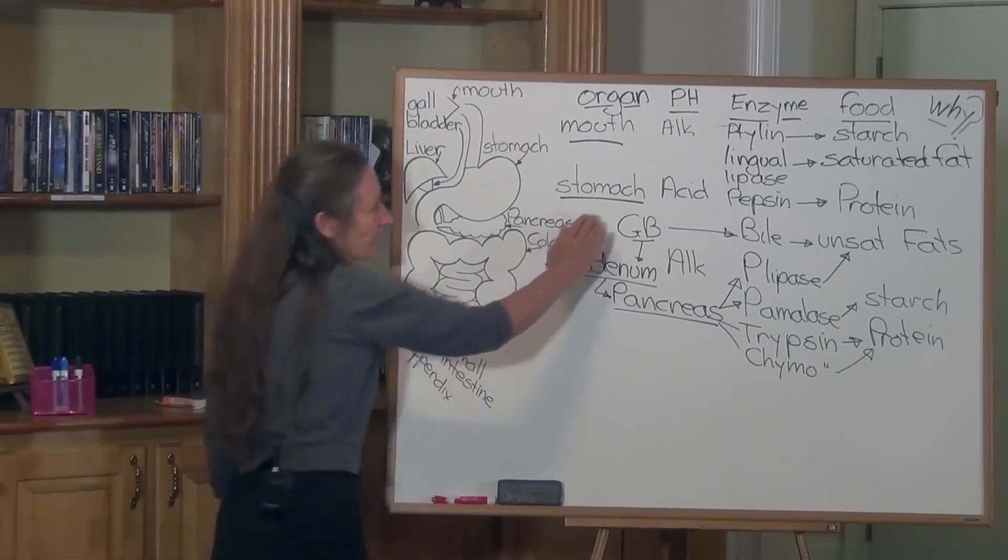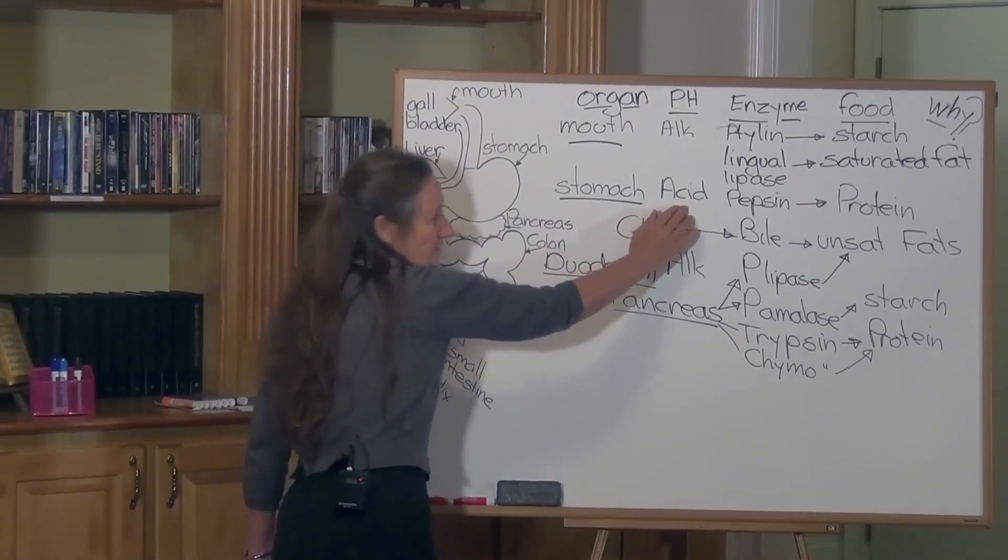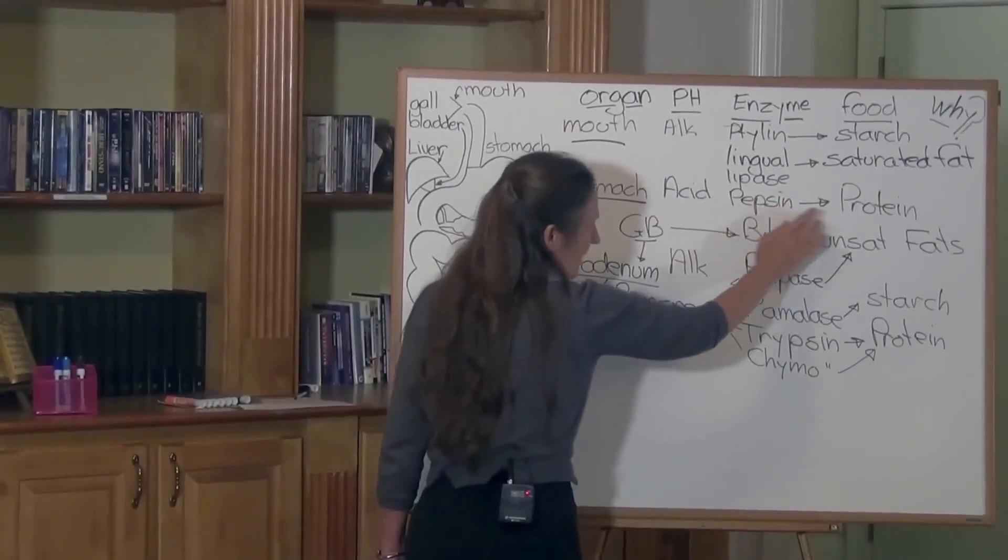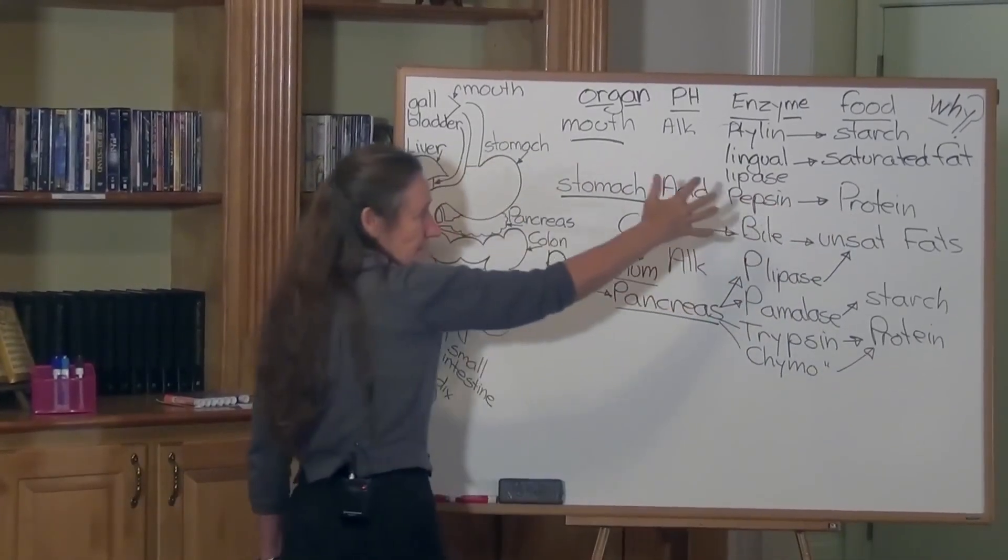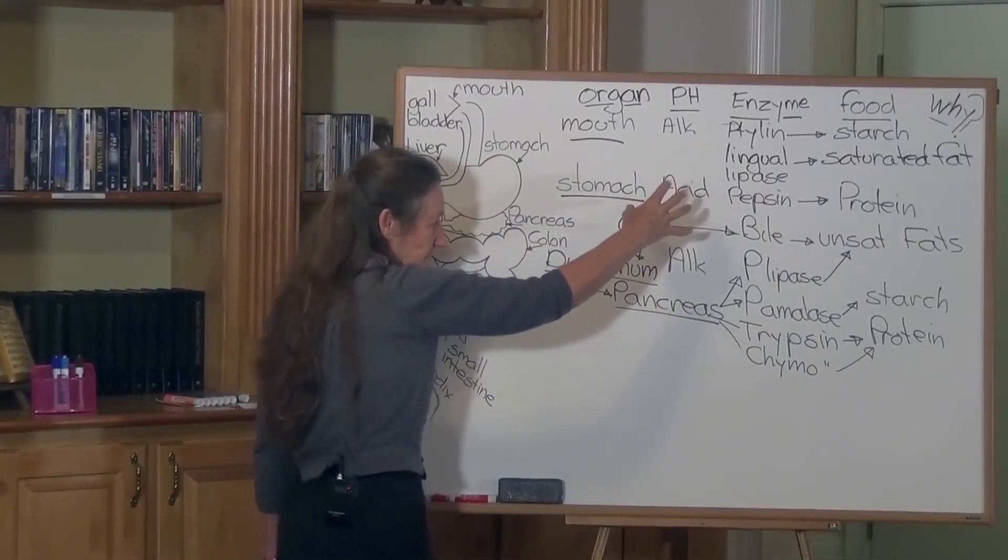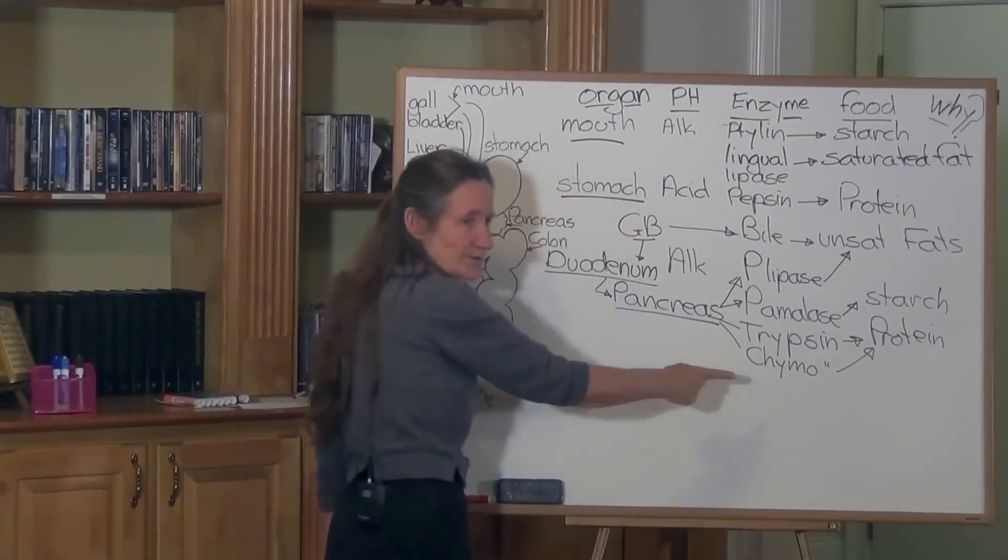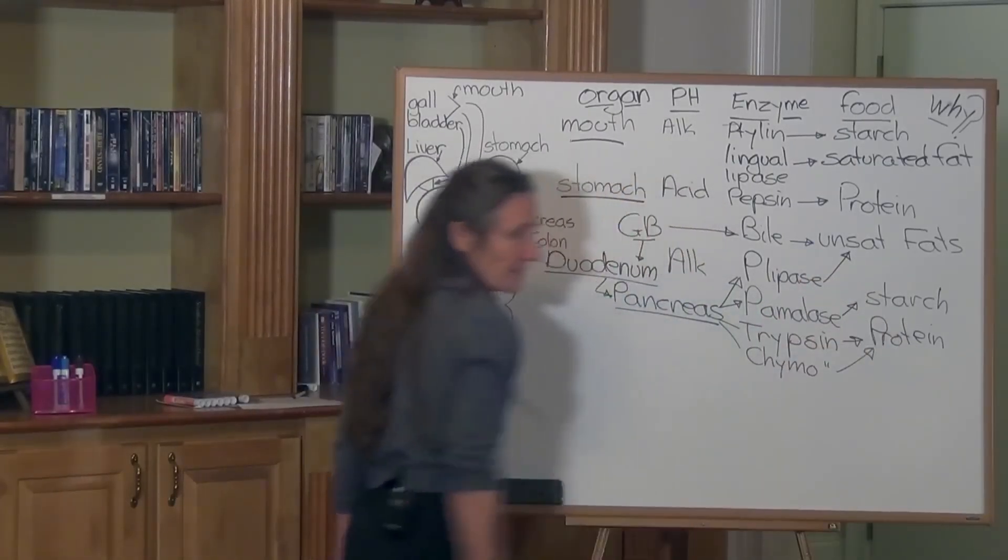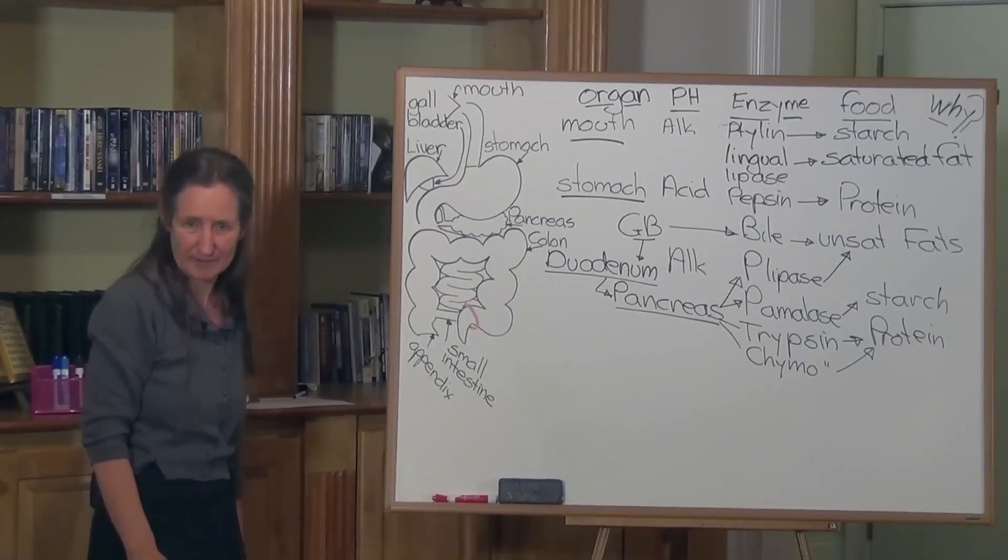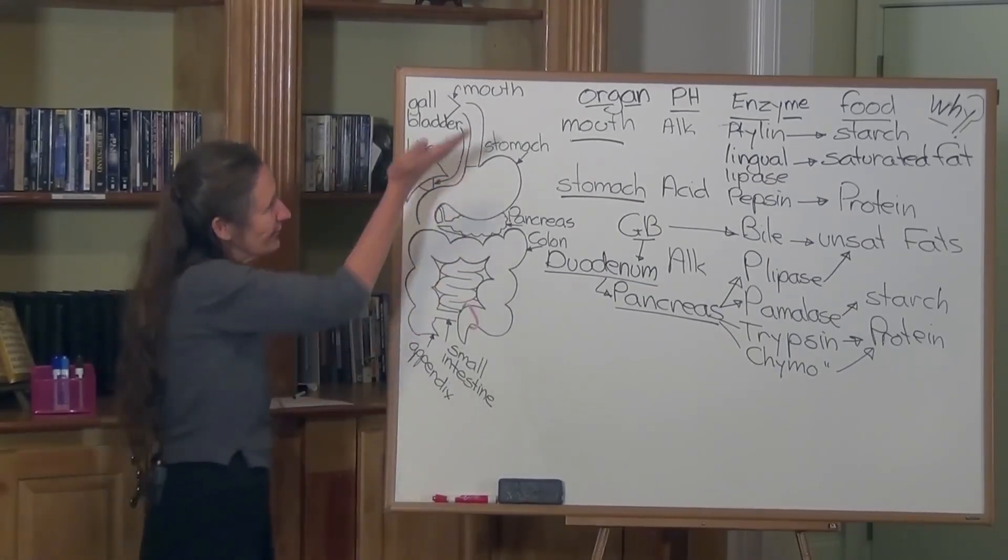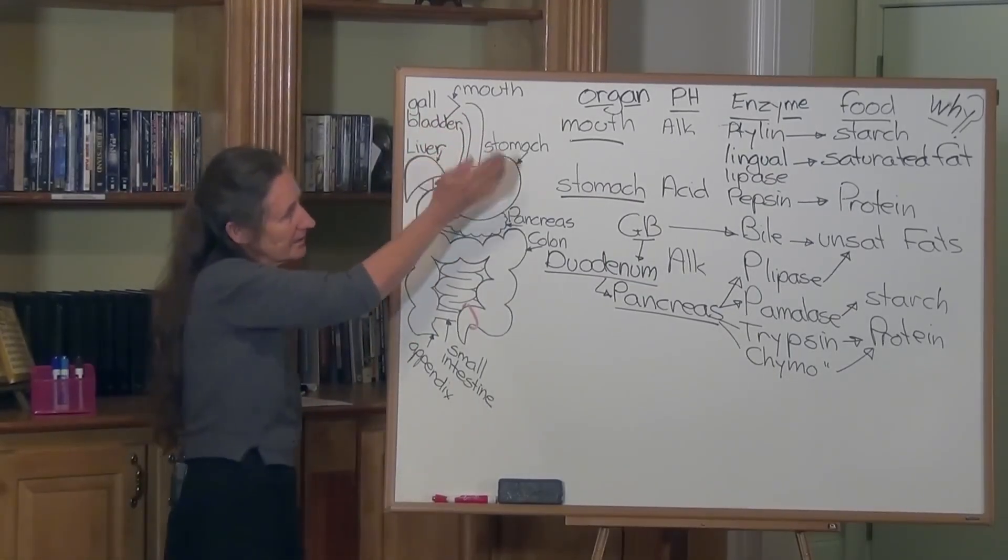But you can see if stomach is not acid enough and pepsin can't break down protein, then protein comes into the duodenum and trypsin and chymotrypsin, they just start the breakdown and they should be finalizing the breakdown. At every stage, every stage.